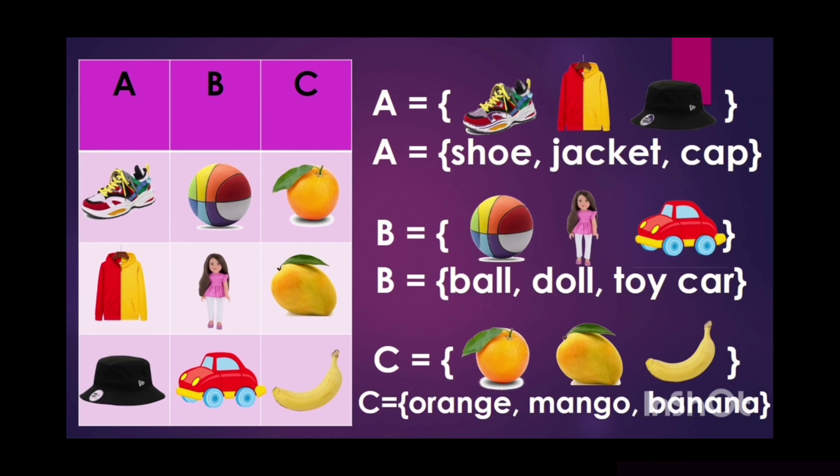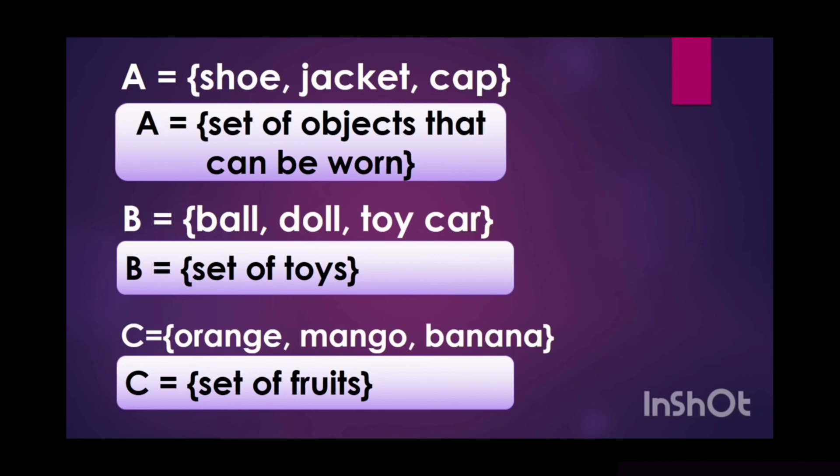Let's figure out if your answers are correct. In set A, they are objects that can be worn. In set B, they are set of toys that can be played with. In set C, these are set of fruits.